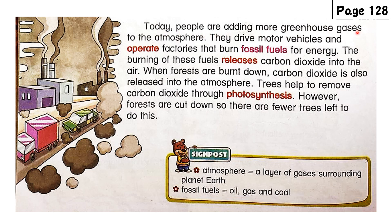Today, people are adding more greenhouse gases to the atmosphere. They drive motor vehicles and operate factories that burn fossil fuels for energy. The burning of these fuels releases carbon dioxide into the air. When forests are burned down, carbon dioxide is also released into the atmosphere. Trees help to remove carbon dioxide through photosynthesis.